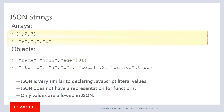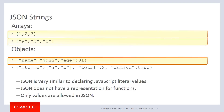Below we have some object examples. The first one is a more typical data structure where we have two fields — name and age — with values John, which is a string, and 31, which is numeric. The whole thing is wrapped in curly braces and fields are separated by commas. That's typically what objects look like in JSON.